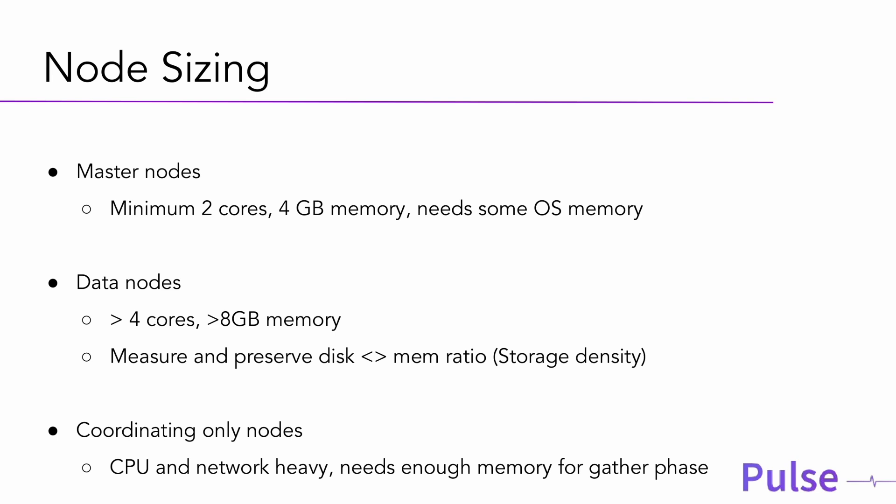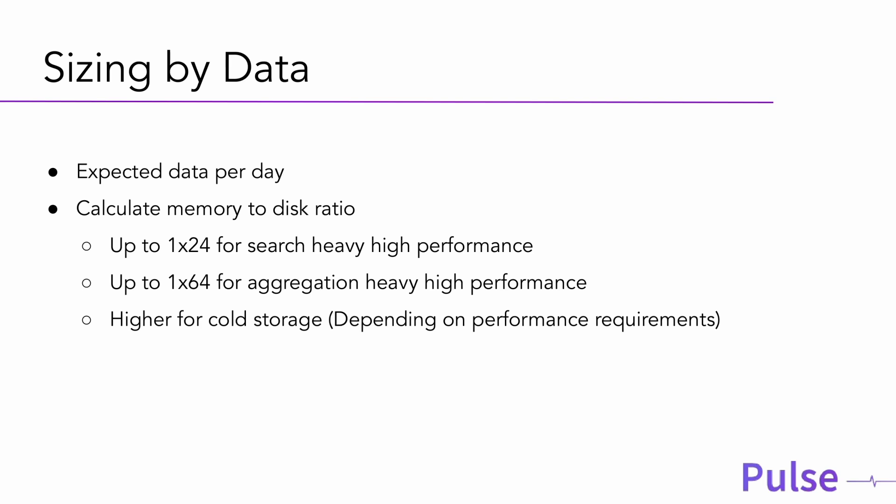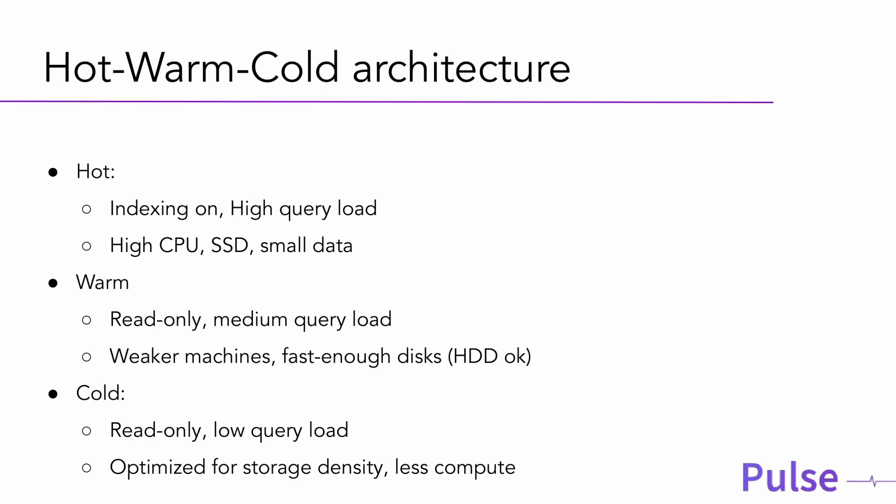Data node sizing really depends on your data and usage. Standard sizing is eight cores and 64 gigabytes of memory, giving about 30 gigabytes of JVM heap. The right configuration depends on disk-to-memory ratio and whether you prioritize storage density or search performance. A common guideline is one gigabyte of memory for every 20 gigabytes of disk for high performance, with higher ratios for storage density at the cost of search speed.